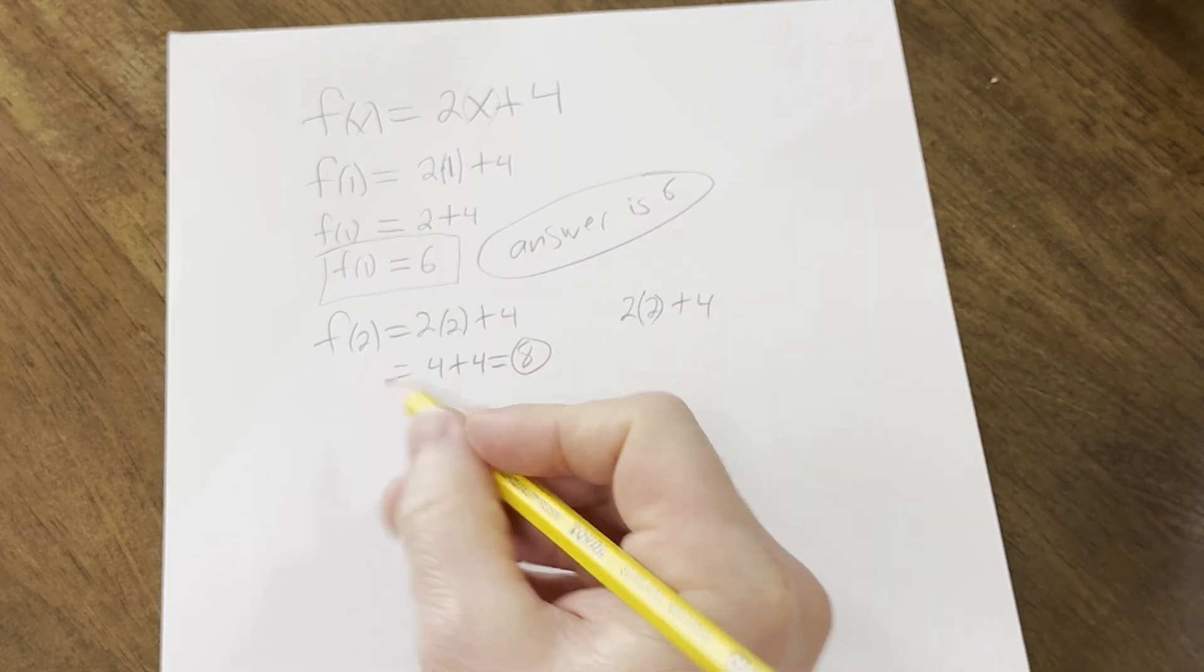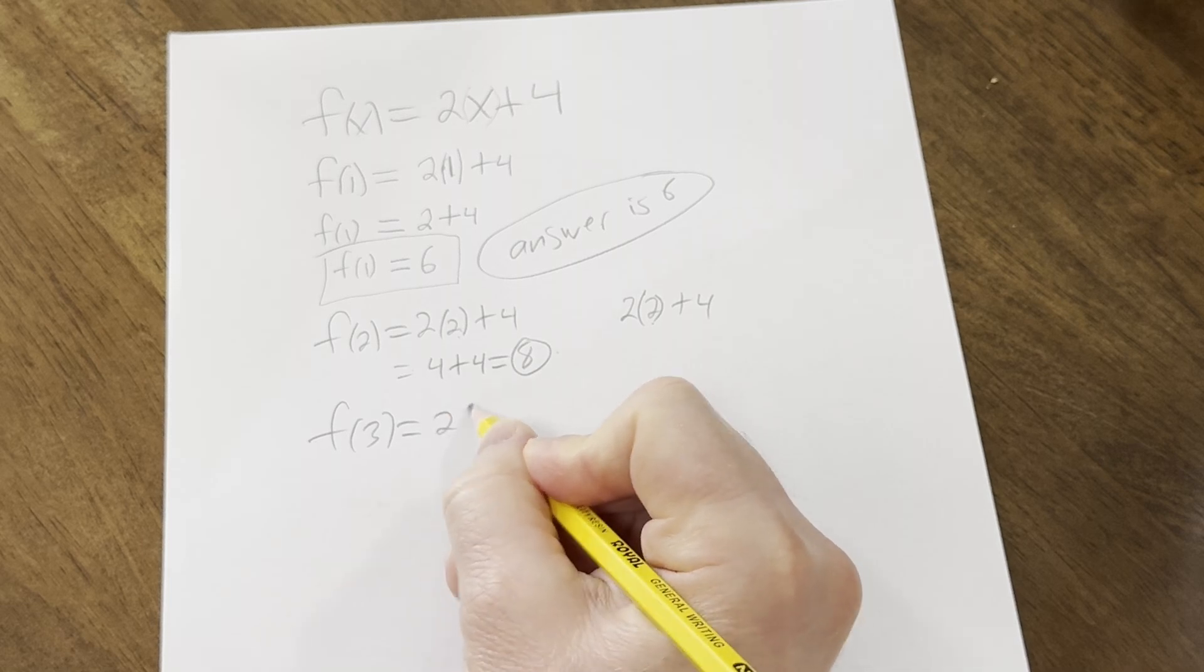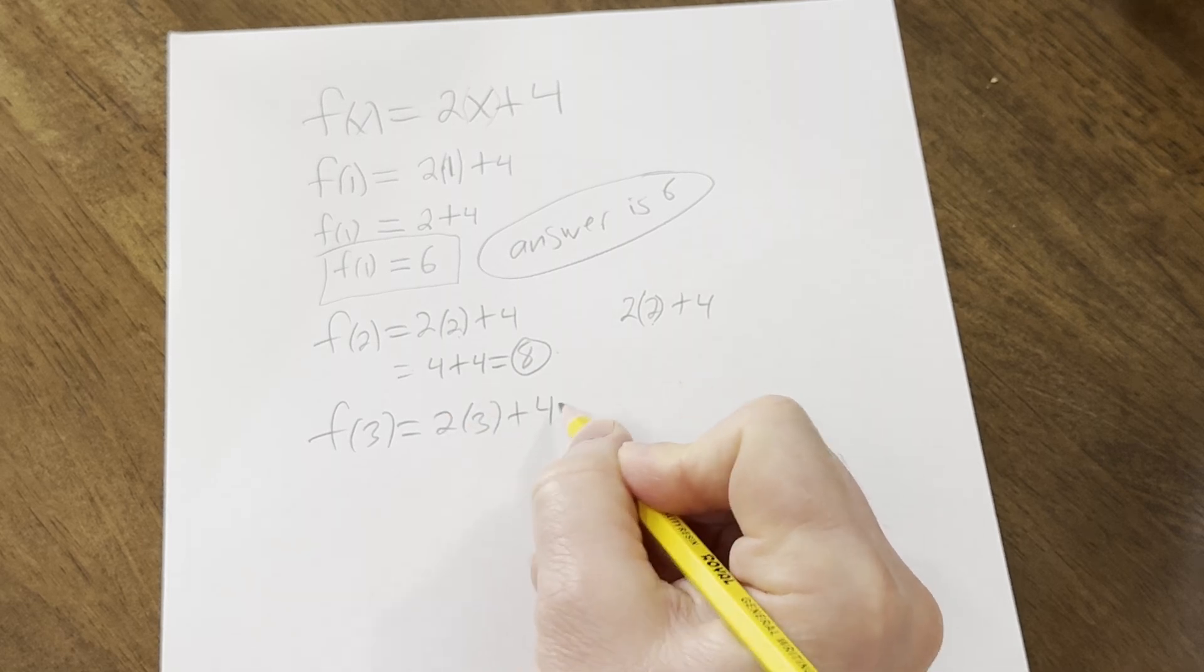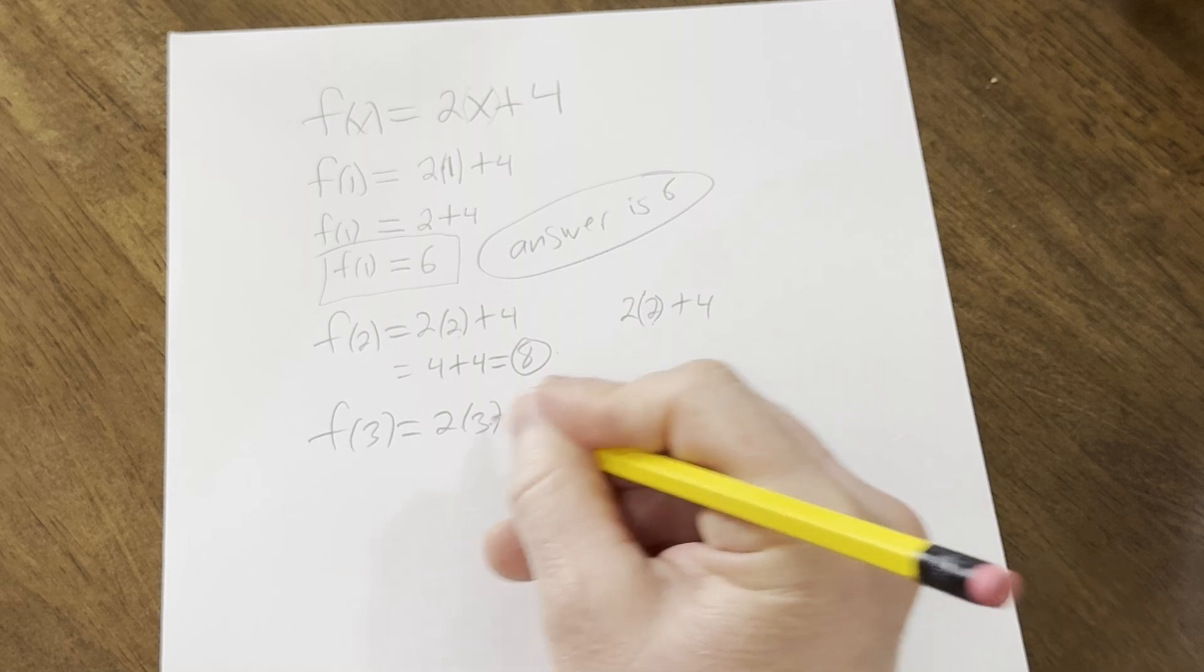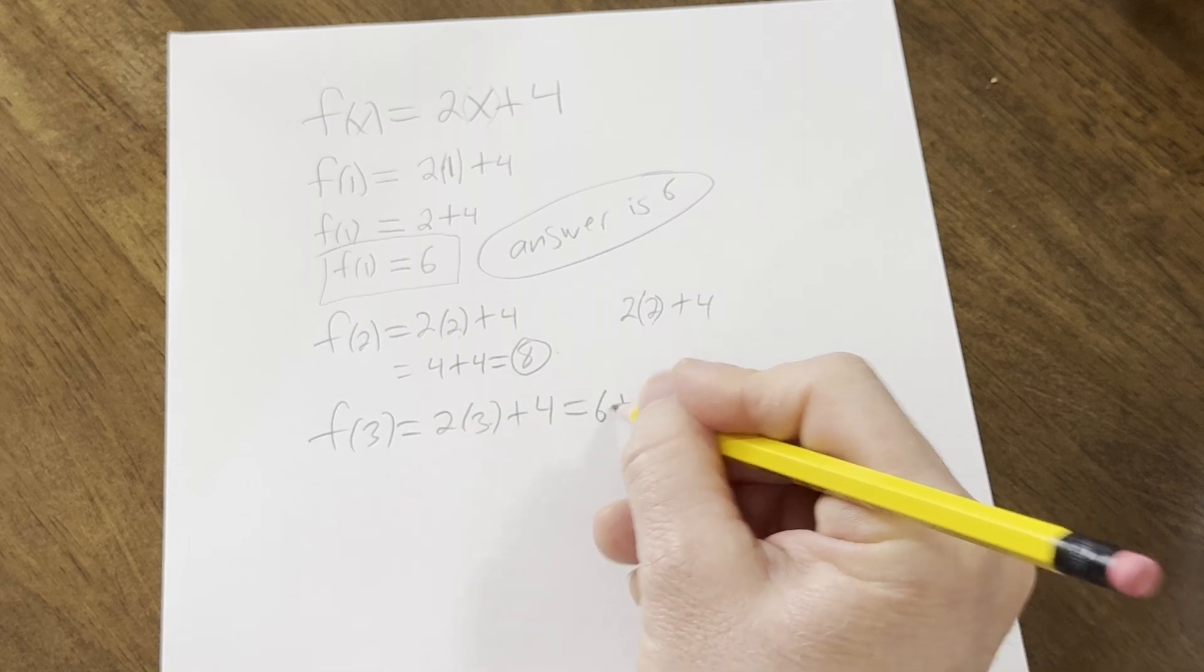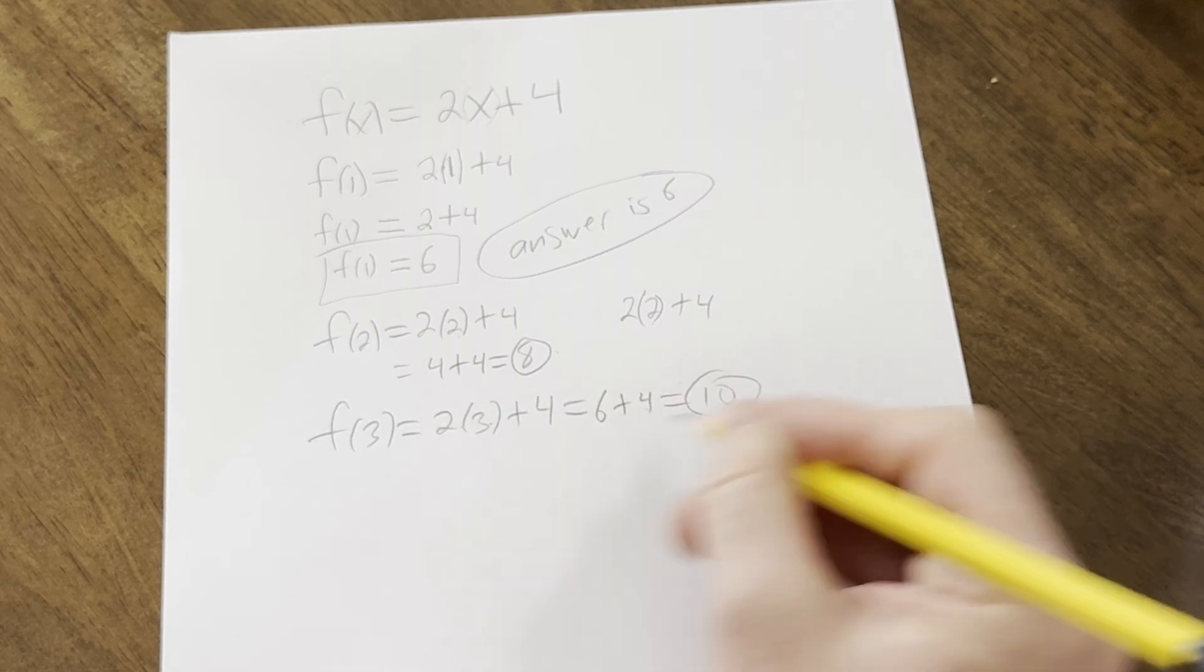Let's do 3. And then you're going to try one after this. So 2 times 3 plus 4. 2 times 3 is 6. So you have 6 plus 4. Notice I'm doing it in one line this time. 6 plus 4 is 10. That's a little bit easier, right? One line like that.